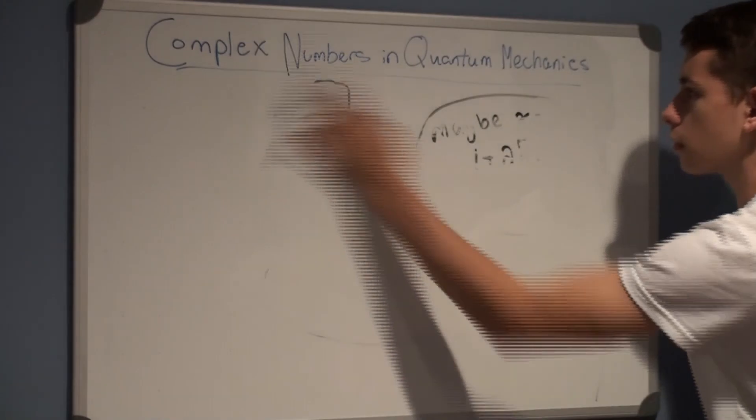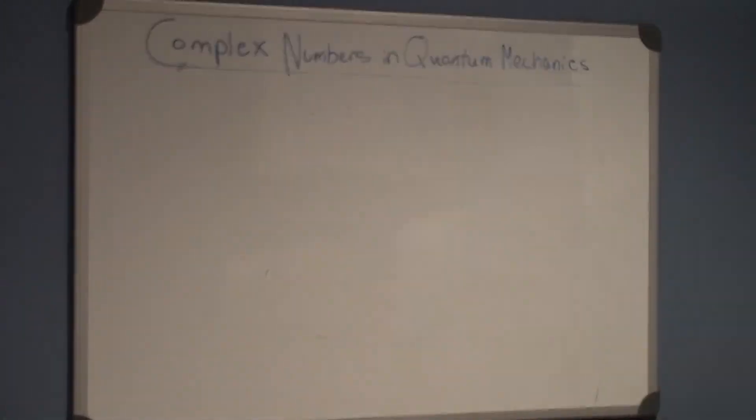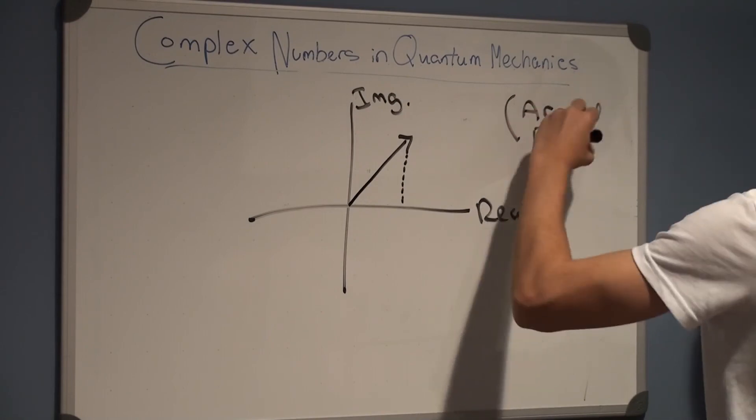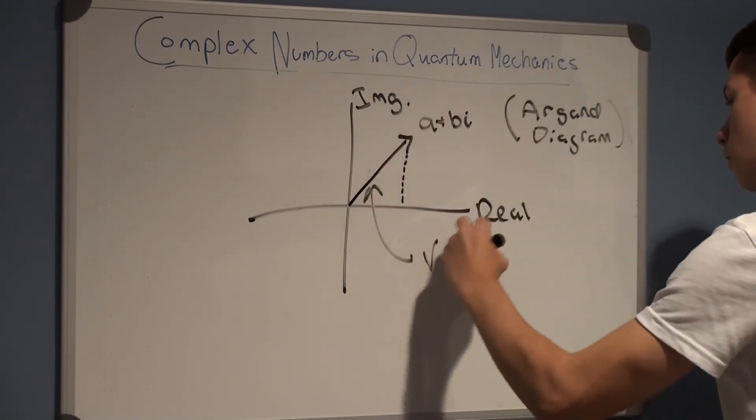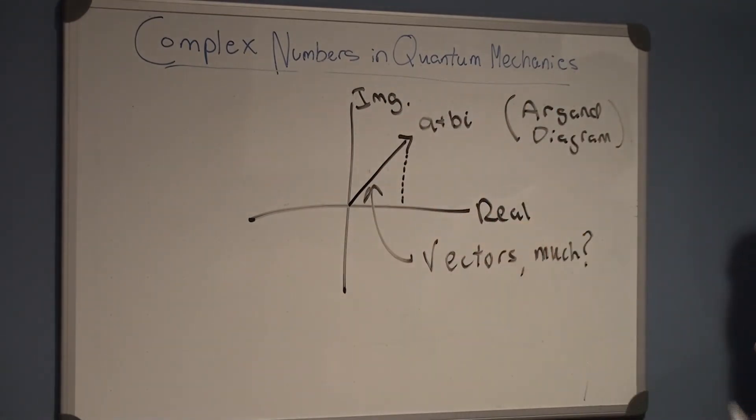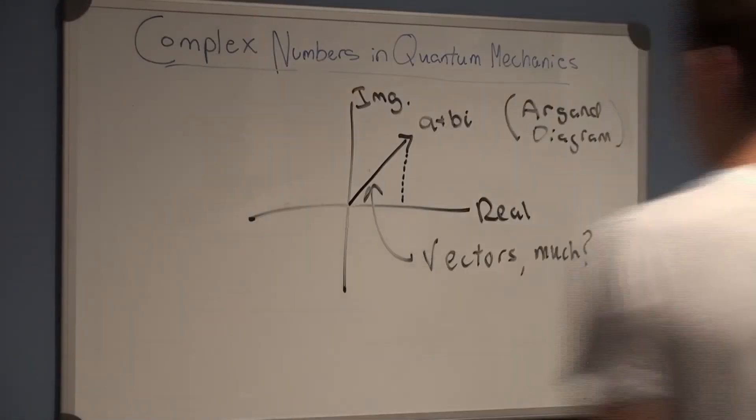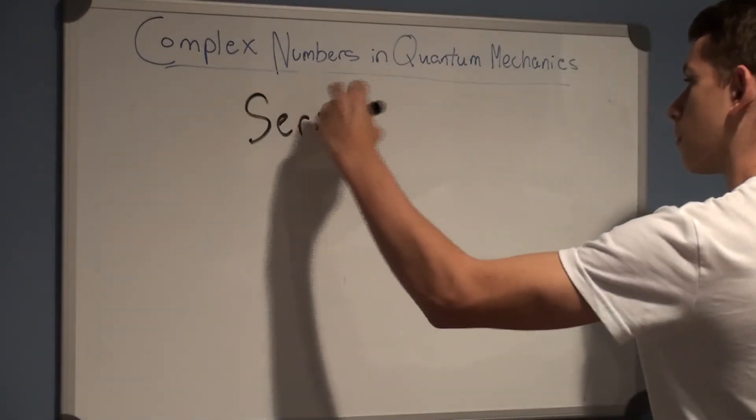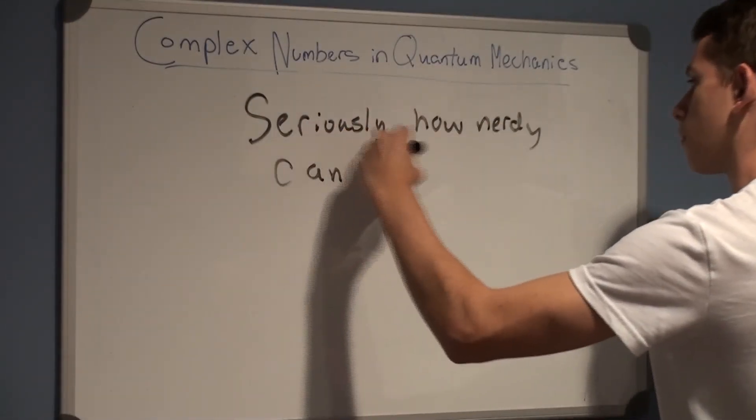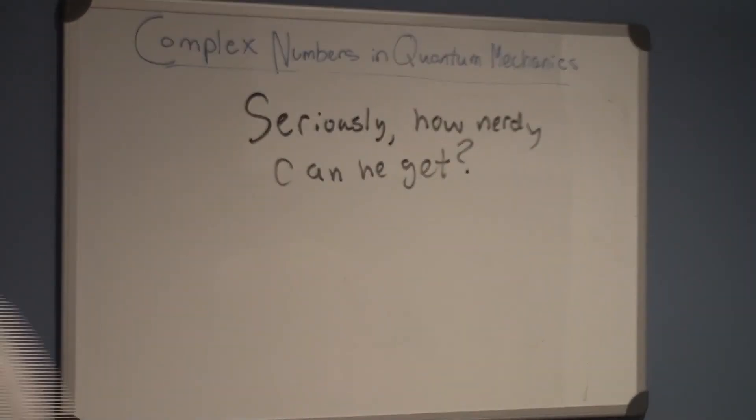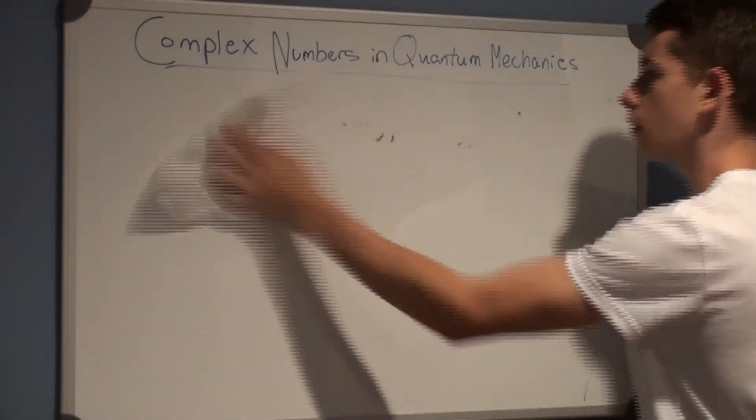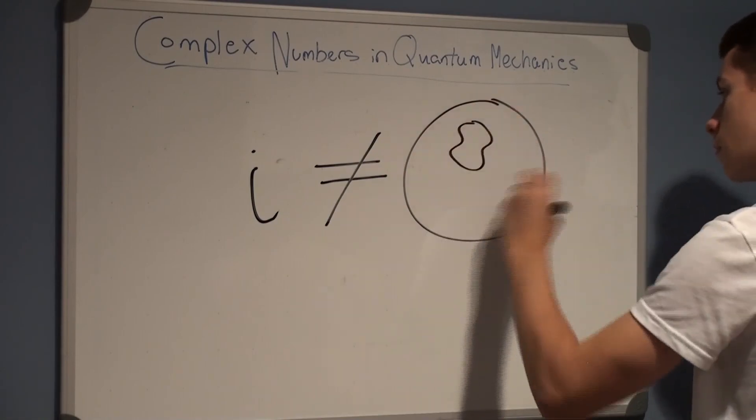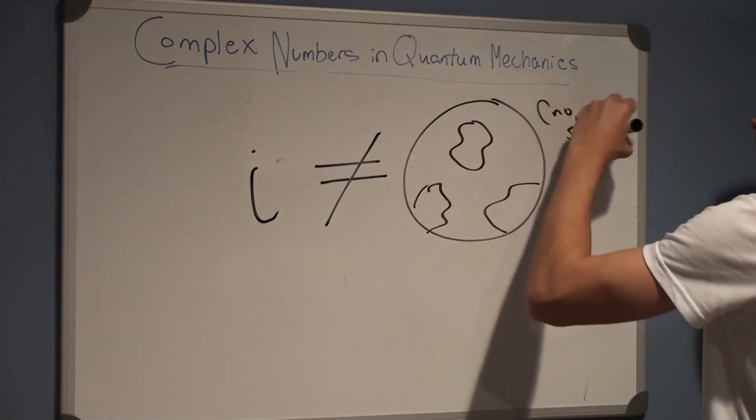However, over the course of the next few centuries, the use of complex numbers became more popular, especially in regards to their geometric interpretation and their incredible similarity to vectors. Analysis of complex numbers soon became an important field, no pun intended, in mathematics. Trust me, I could talk about the history of complex numbers all day, but this is supposed to be a physics video.